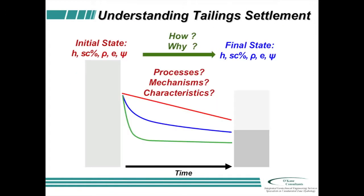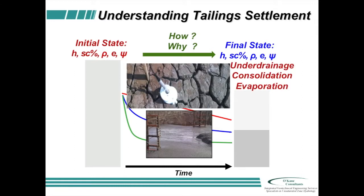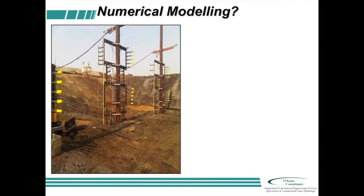I'm taking something from an initial state to a final state over time. You can choose whatever metric you want to describe these two states — we'll probably use solids content or void ratio. Just make sure if you're using solids content that you understand your fines content and have normalized it. The idea is: how and why does it get there? What are the mechanisms, processes, and characteristics that control and influence that behavior? We're going to talk about underdrainage, consolidation, and evaporation — but primarily evaporation.